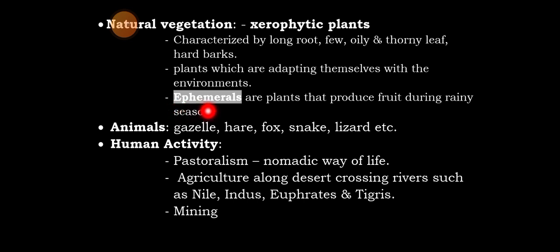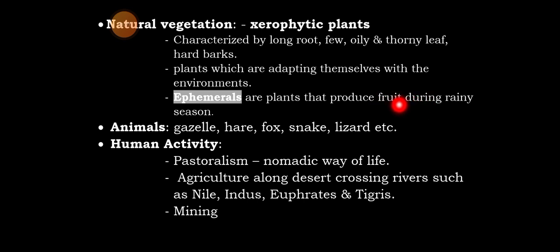A special kind of plant in the desert is called ephemerals. Ephemerals are plants that produce fruit during the rainy season. Examples include cacti. These plants complete their life cycle quickly when rain is available, making them uniquely adapted to desert environments.